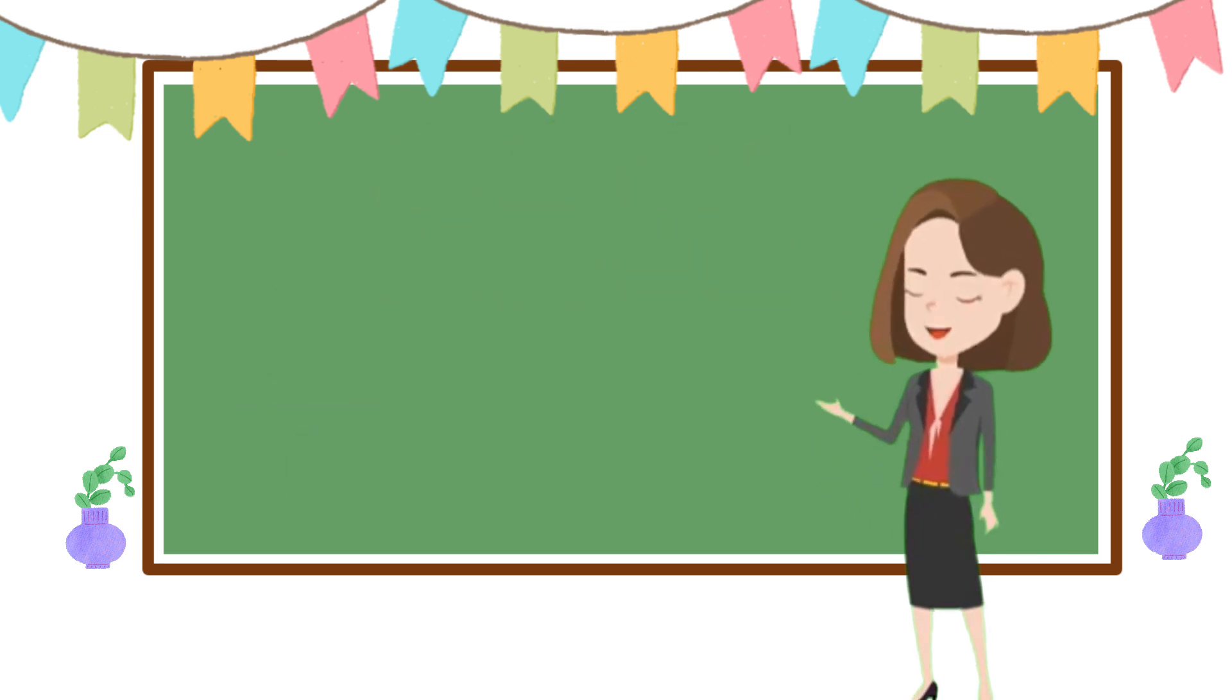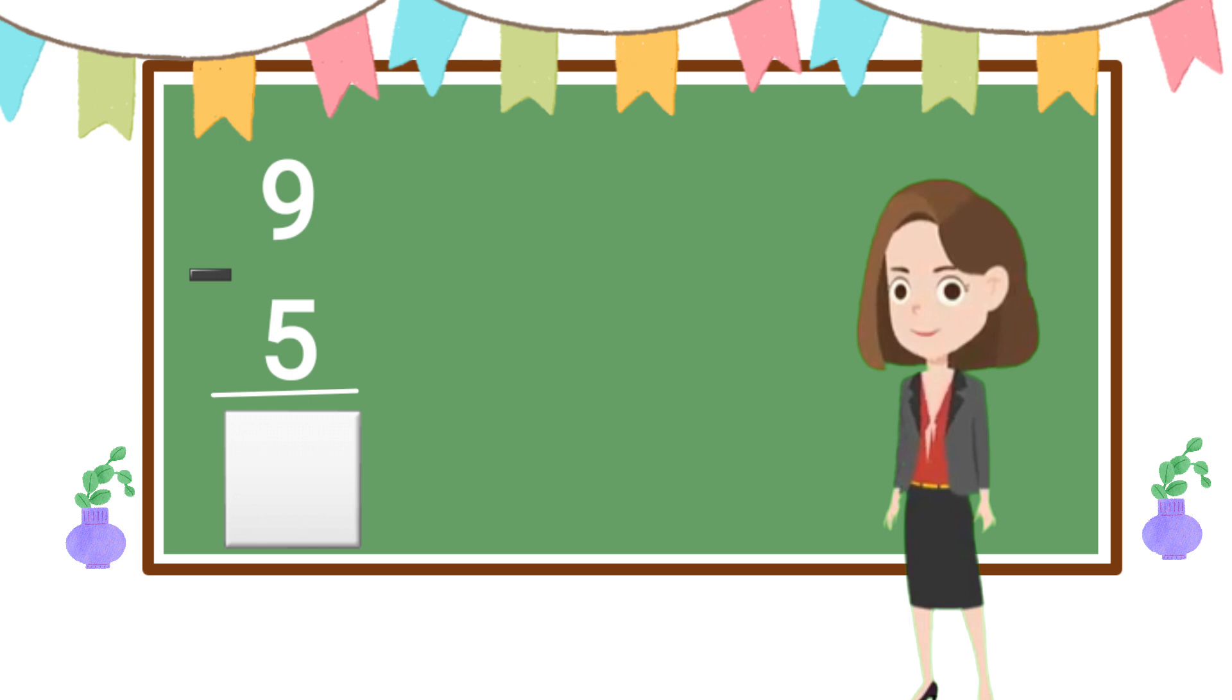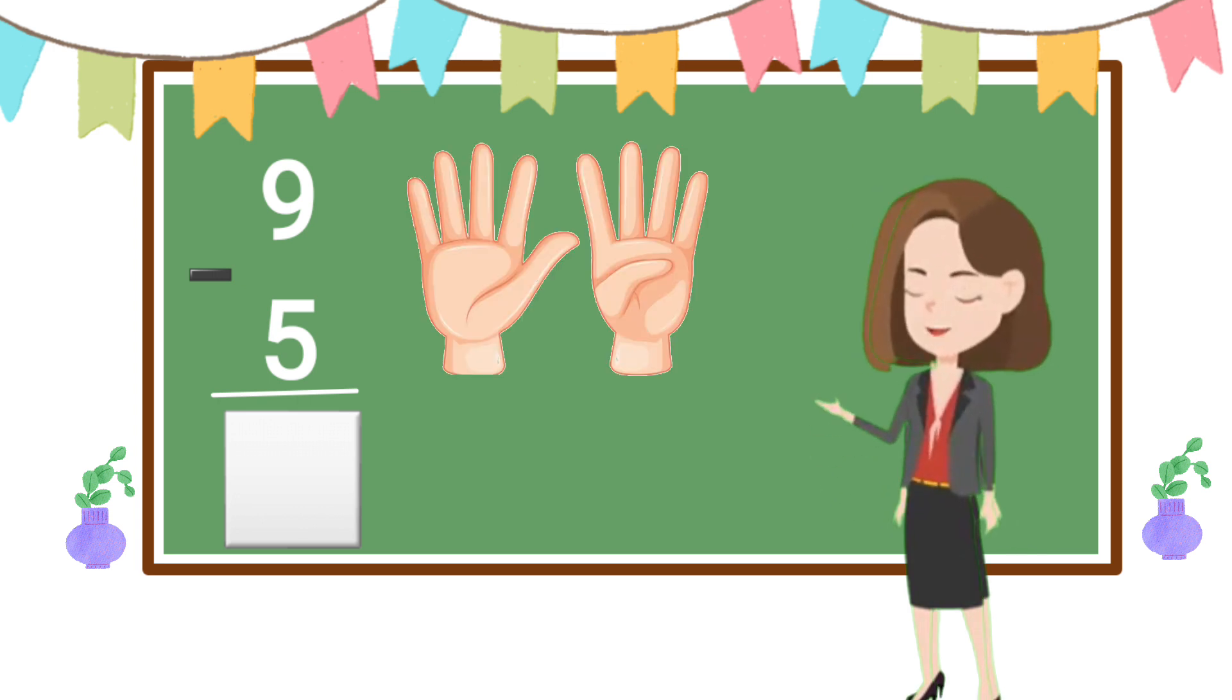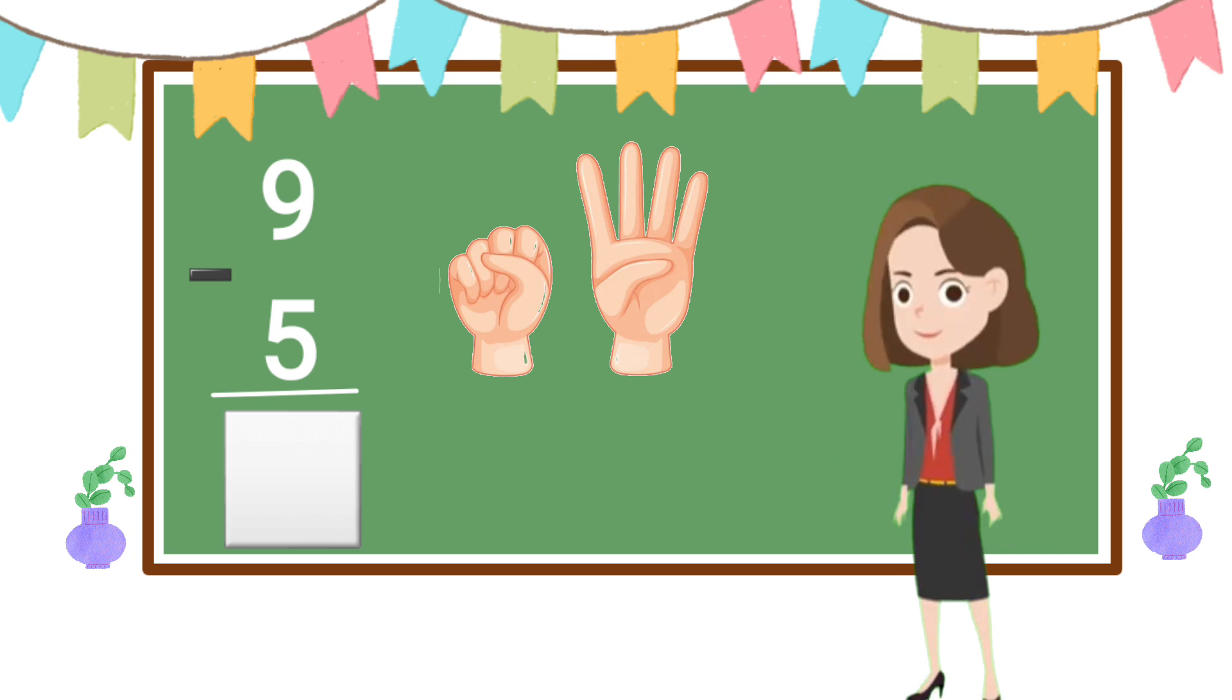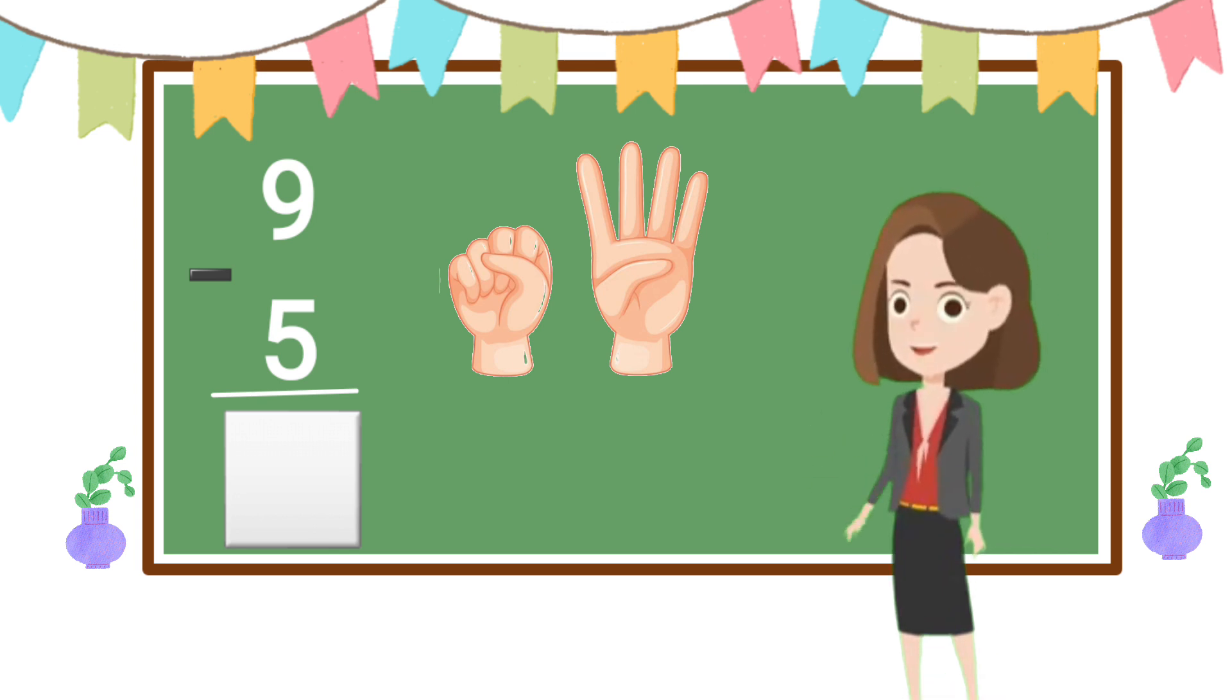Now next one. How will you read this? Nine minus five. You can use your fingers too. Put up your nine fingers first. How many fingers will you put down? Five, very good. Now put your five fingers down. How many fingers remain? Four. Four fingers, very good.